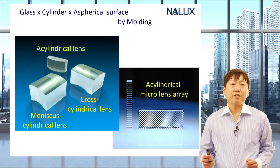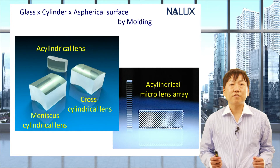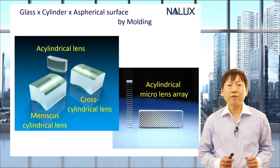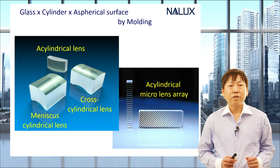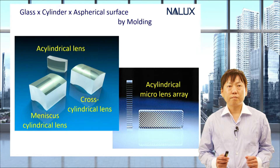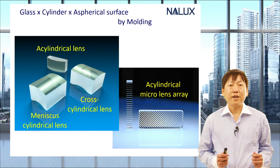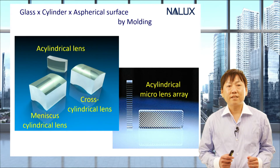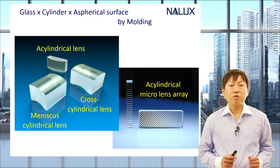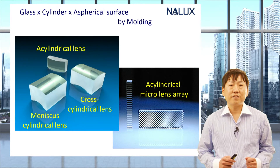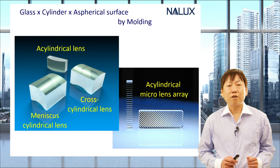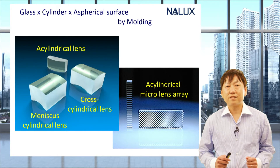Our technology enables the various structures of acylindrical lenses known to be difficult in the glass polishing process. Typically, this kind of lenses are produced in plastic — that's actually our main business. However, our press technology can also provide this kind of complex structure in glass lenses.